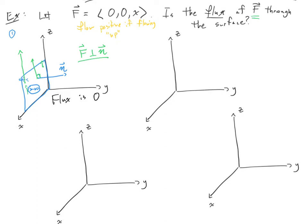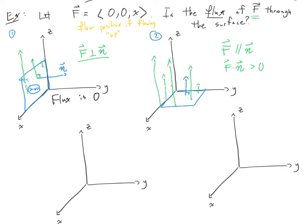Let's swap surfaces. Same vector field, but my new surface in example two is the xy plane, oriented so the positive z-axis is up. Now as I move farther in the x-axis, this vector field is pointing more and more positive in the z-direction. If you pick a point on the plane, you get upward flow that grows as you move away from the y-axis. Here f is parallel to n and they're pointing in the same direction, so f dot n is bigger than zero, and therefore we expect the flux to be positive.